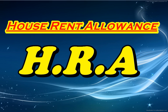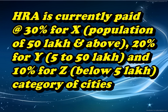House Rent Allowance. HRA is currently paid at the rate of 30% for X, 20% for Y, and 10% for Z category of cities.